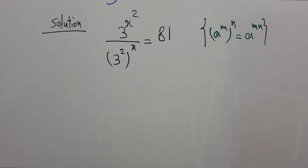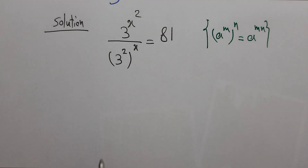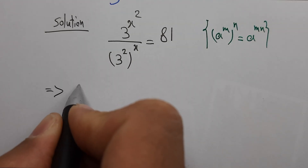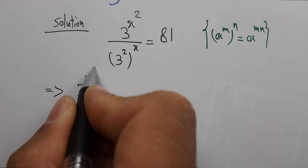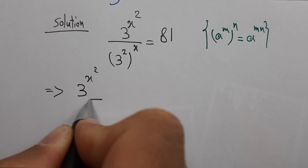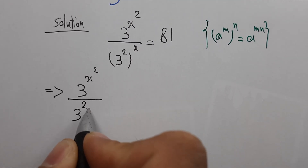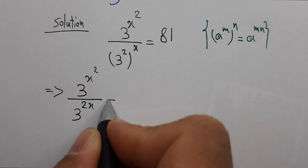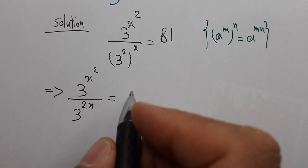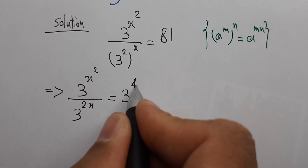According to that, we can write 3 power x squared over 3 power 2x equals 81, which is 3 power 4.